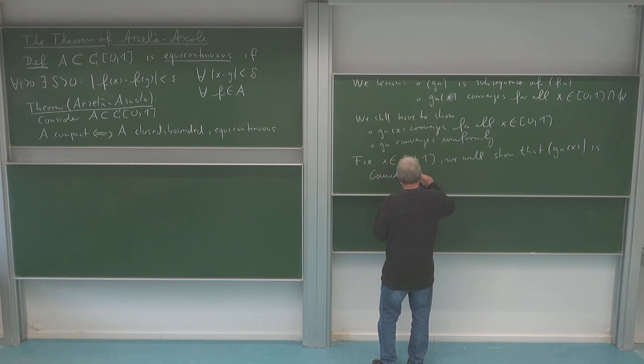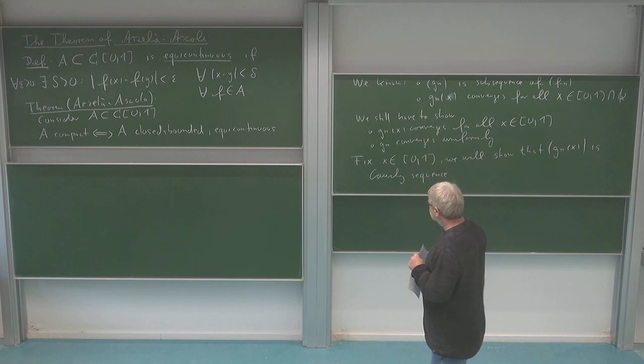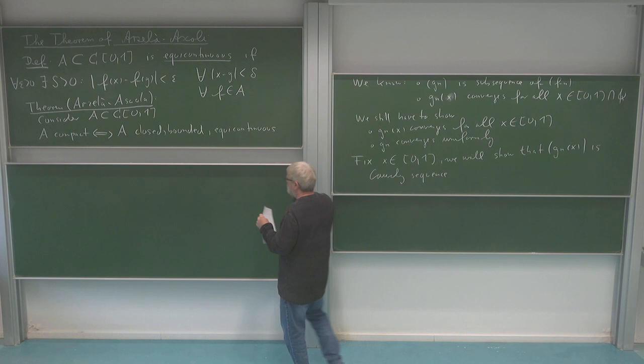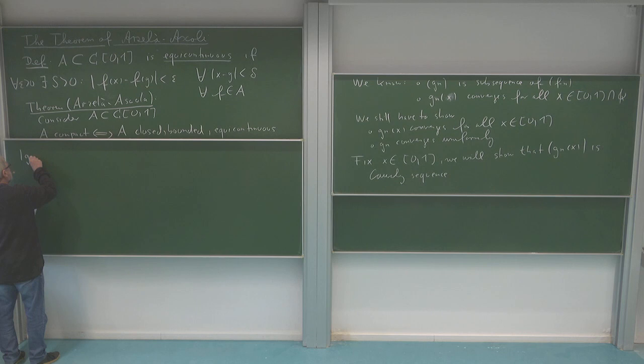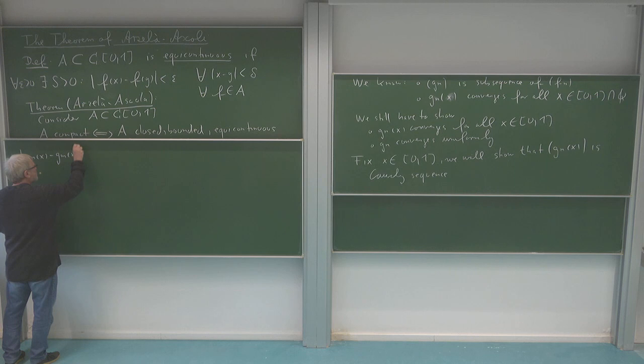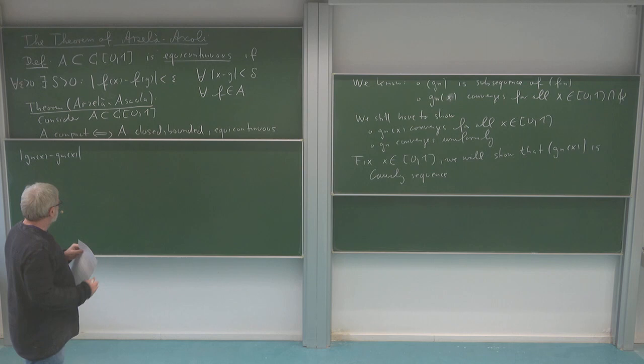In the second step we hope to improve this to a uniform Cauchy sequence property. But let us start with this - we want to check that this is a Cauchy sequence. So we should see that GN of x minus GM of x can be made as small as we want if we only make n and m big enough. About x we don't know anything.